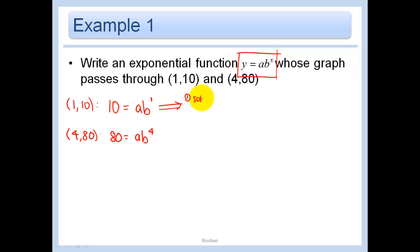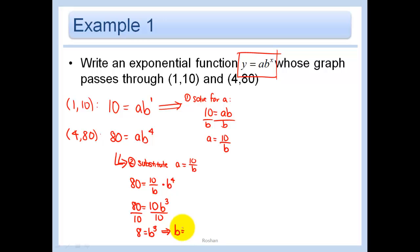So we have 10 equals ab. Divide both sides by b, we have a is equal to 10 over b. Now what I'm going to do is I'm going to use substitution. So what I mean by that is substitute a equals 10 over b in this equation. So we have 80 equals a, which is now 10 over b, times b to the 4th. In other words, 80 equals b to the 4th over b is just b cubed, so we have 10b cubed. Let's divide by 10. 8 is equal to b cubed. In other words, b is equal to 2.